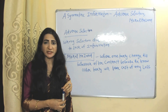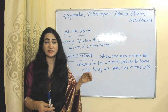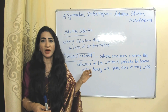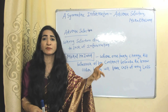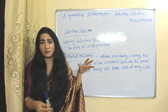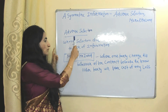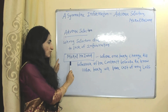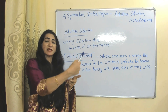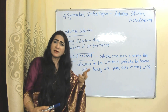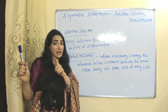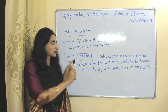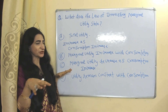Asymmetric information is a situation where one party in a transaction has more or better information compared to the other party. It leads to two consequences: adverse selection and moral hazard. Adverse selection means wrong selection due to lack of information. Moral hazard means one party changes their behavior after a contract because they know the other party will bear the cost of any loss, while the other party has no information about this behavior change — this is morally wrong, hence called moral hazard.